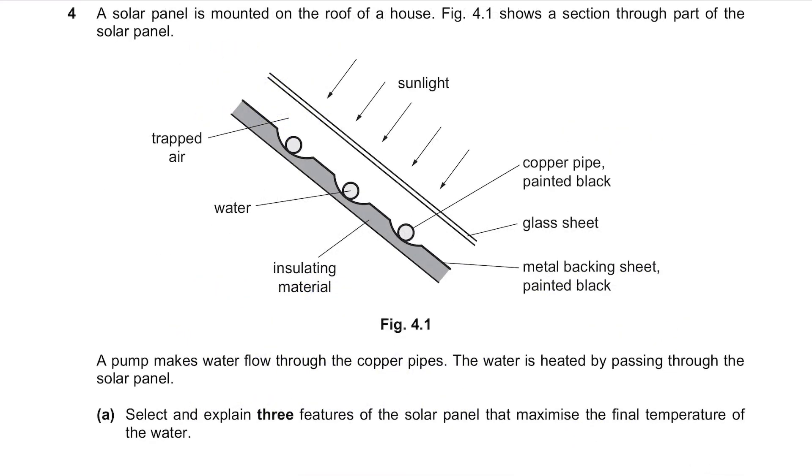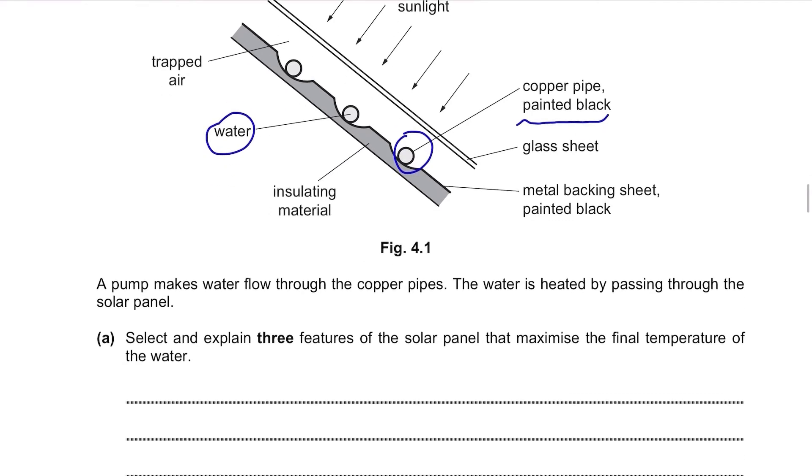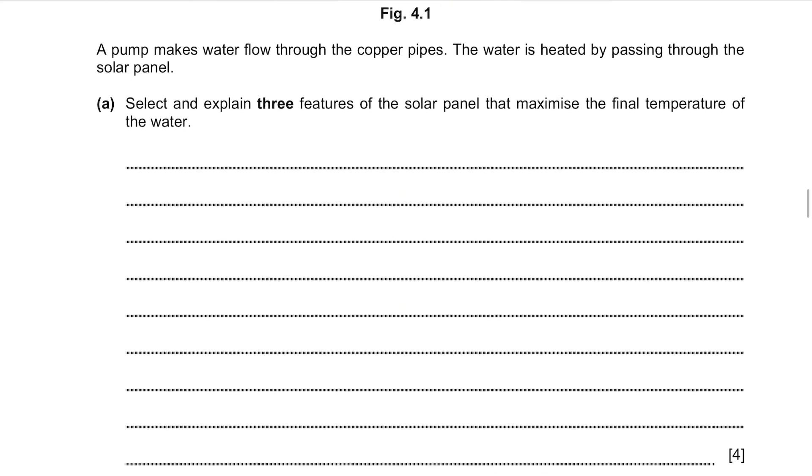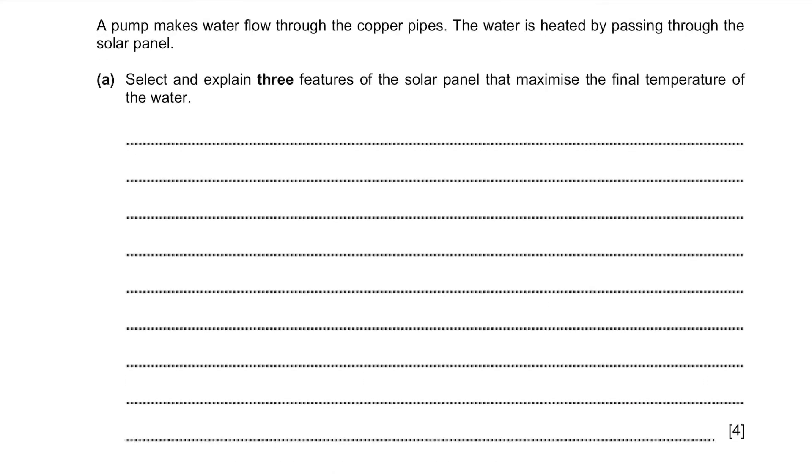Question 4. A solar panel is mounted on the roof of a house. Figure 4.1 shows a section through part of the solar panel. A pump makes water flow through the copper pipes. The water is heated by passing through the solar panel. These are the copper pipes painted black and water passes through these. Part A. Select and explain three features of the solar panel that maximize the final temperature of the water.